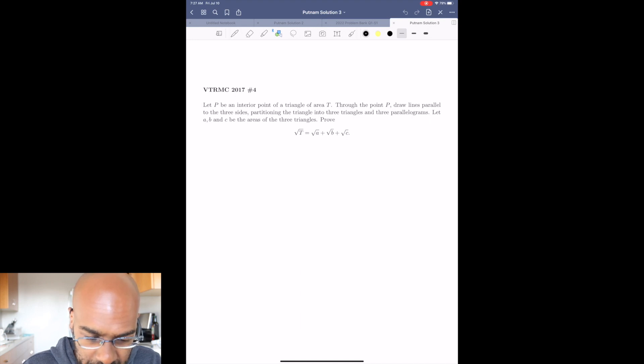You have a triangle and it has area T, so I'll just draw a random triangle here. And then you're given some information about the triangle. You have an interior point P somewhere, maybe like right over here.